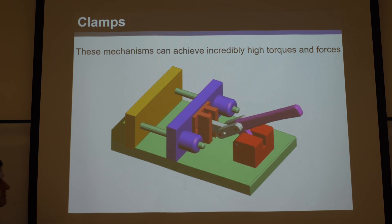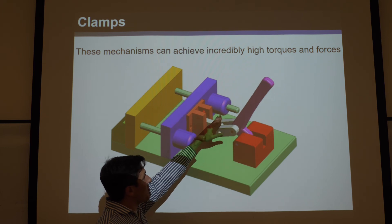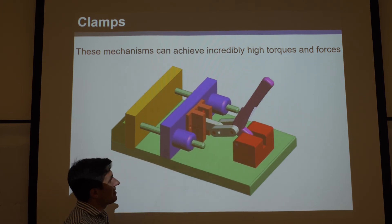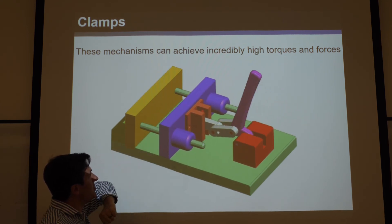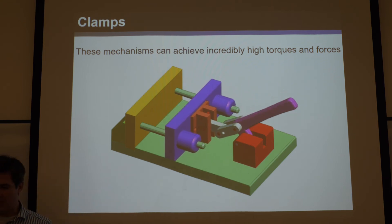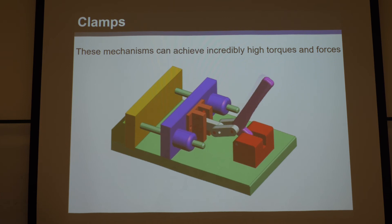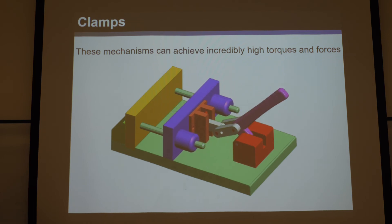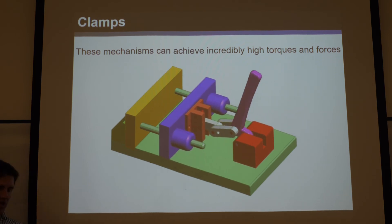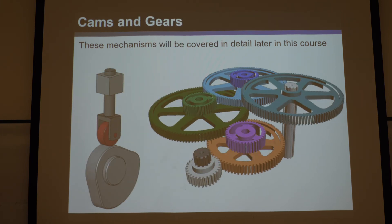This is a clamp mechanism that takes a small input force over a large range and transforms it into a very large force over a small range — like a vice grip — to clamp things in place. These are mechanical advantage mechanisms that turn the weak force of a human arm into a huge force capable of lifting entire vehicles.